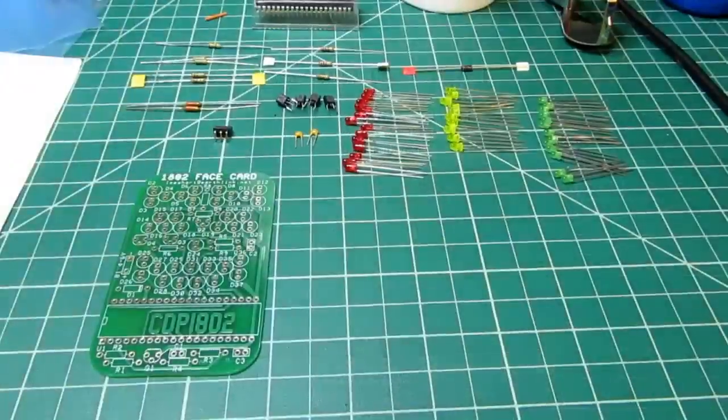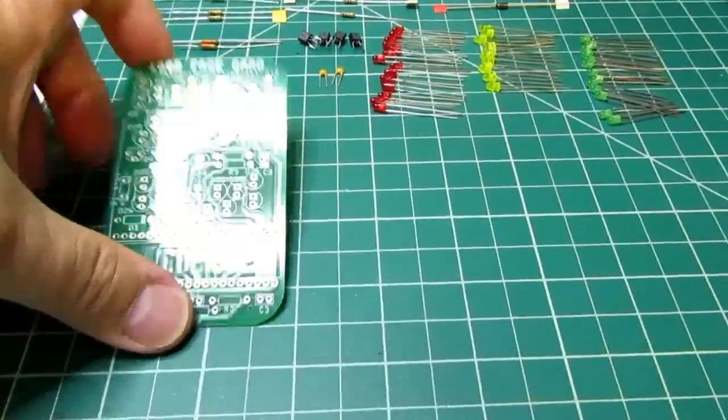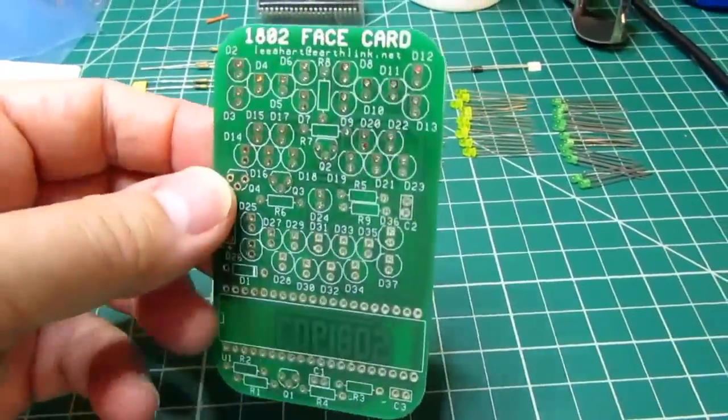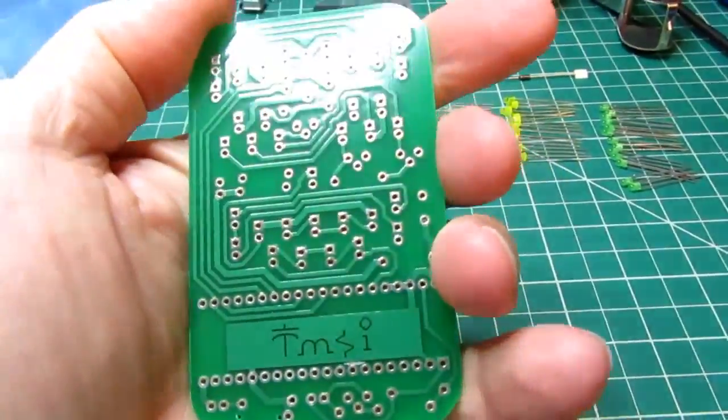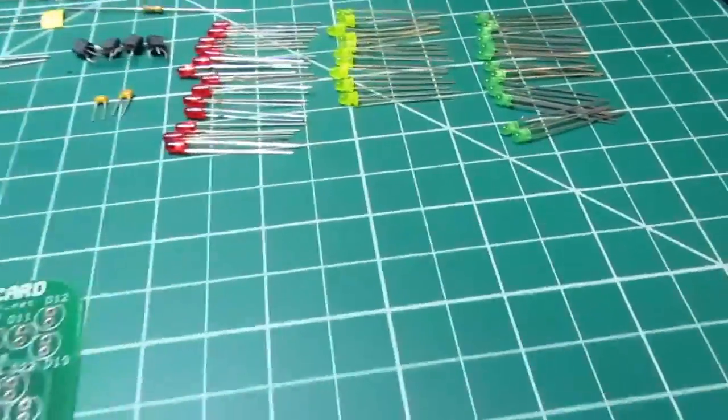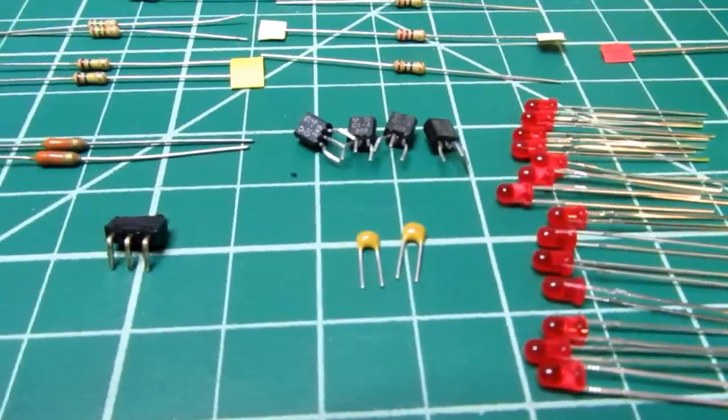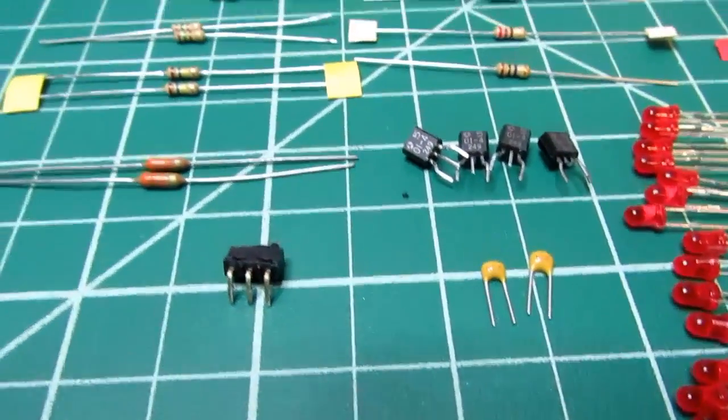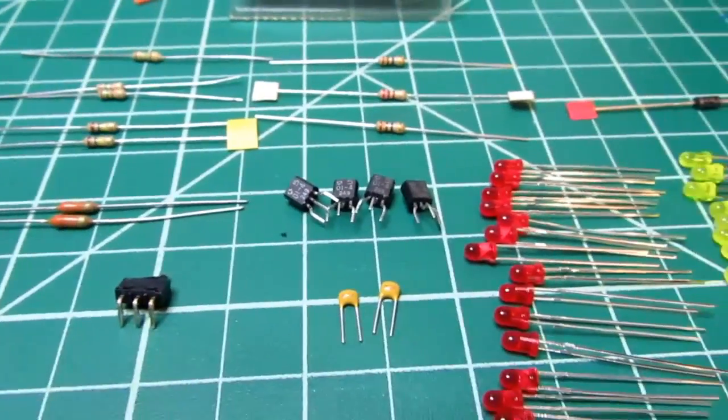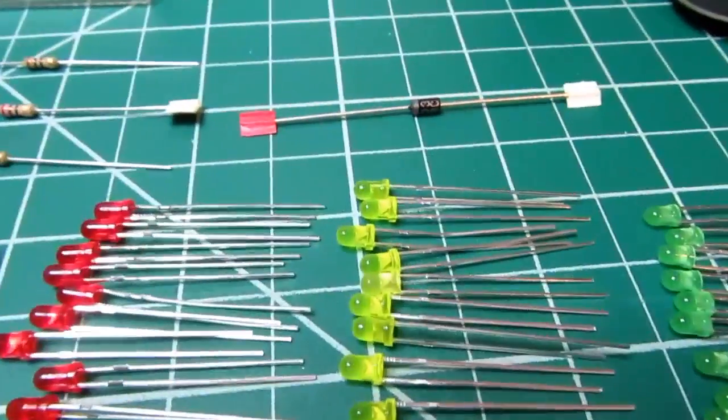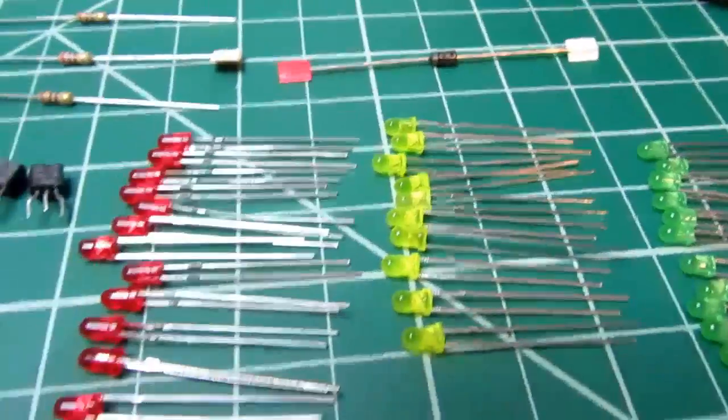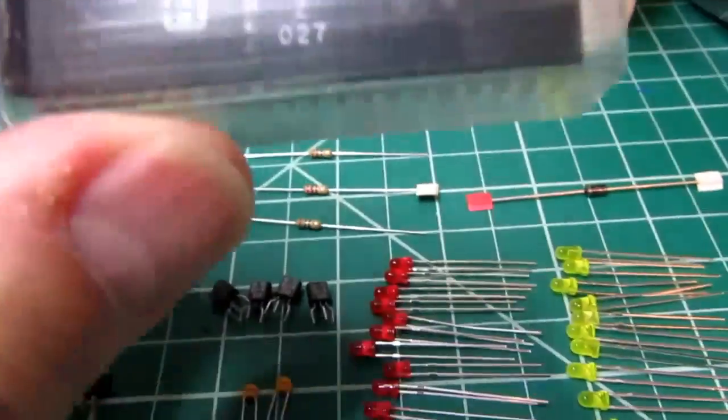This $20 kit includes a double-sided circuit board, a bunch of LEDs in three colors, several transistors, a small switch, a couple of capacitors, and an assortment of resistors and a 1N4003 diode.